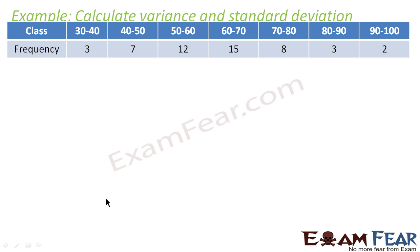Let's draw the table. Class: 30-40, 40-50, 50-60, 60-70, 70-80, 80-90, 90-100. The frequency given is 3, 7, 12, 15, 8, 3, 2.